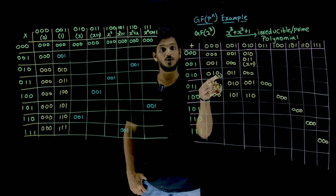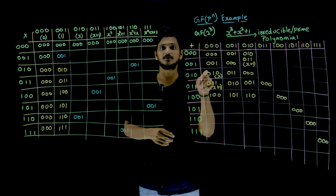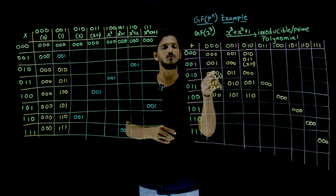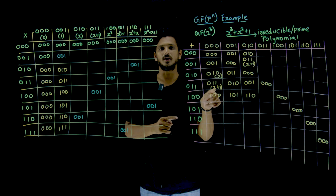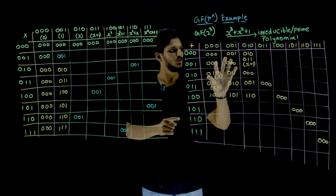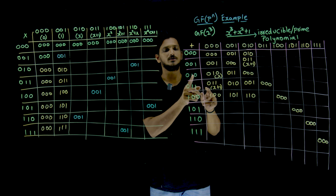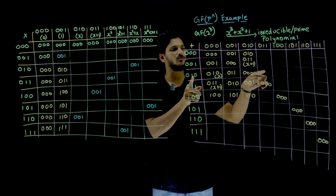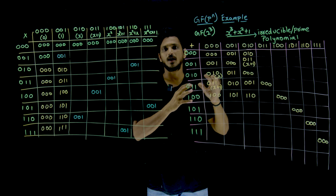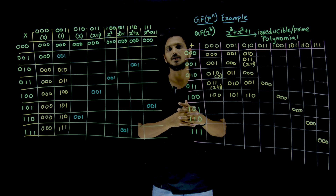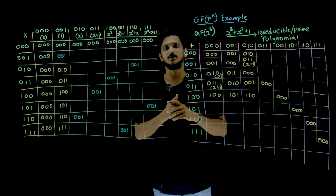010 means you have to write it as X — X is the polynomial equation for 010. So 011 means X plus 1 is the polynomial equation. You do the addition of all the possibilities: 010 addition with 011, 010 addition with 100, and you fill the table. For better practice, you do it. So identity element exists for the addition operation.